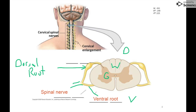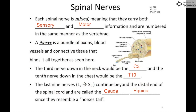Each spinal nerve is mixed, meaning it carries both sensory and motor signals. Signals going out to the muscles are motor commands, and sensory information comes in from touch receptors, pain receptors, and any types of incoming information. A nerve is a bundle of axons, with blood vessels that feed them and connective tissue that binds it all together. The nerves are named nicely — the third one down in the neck is C3 for cervical 3.